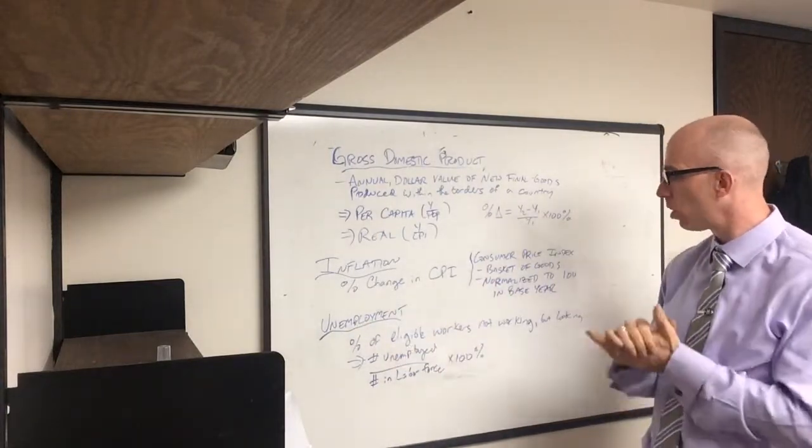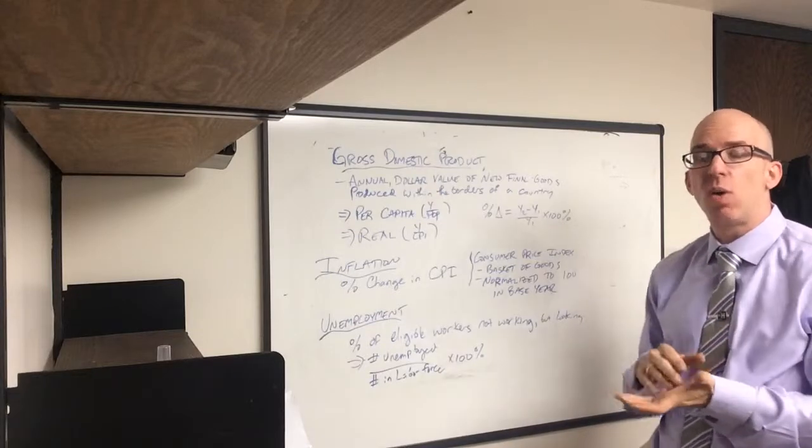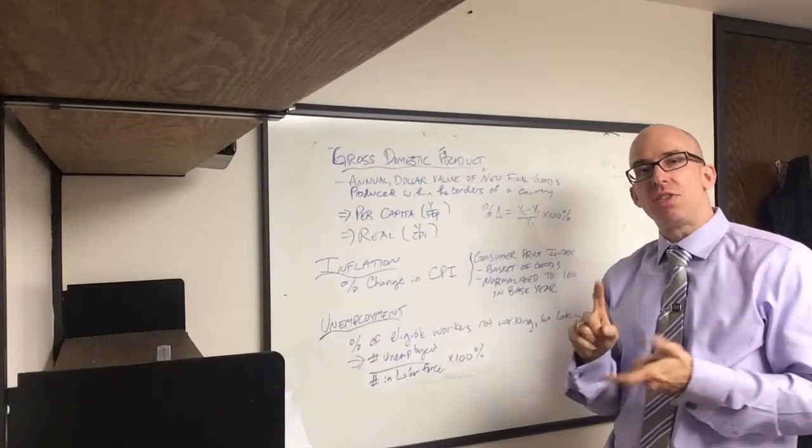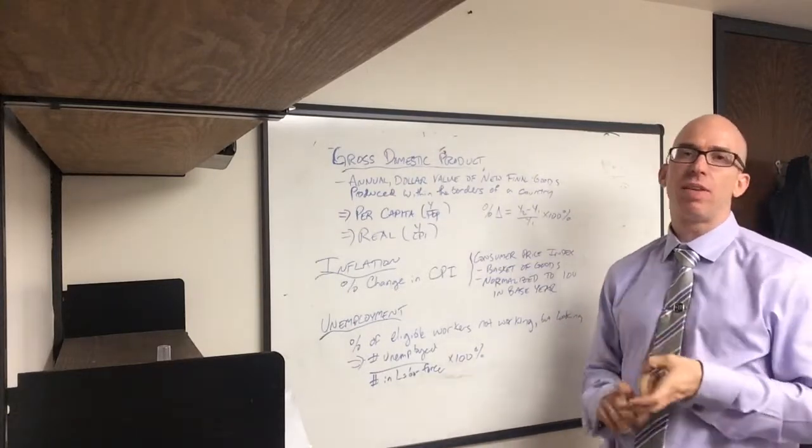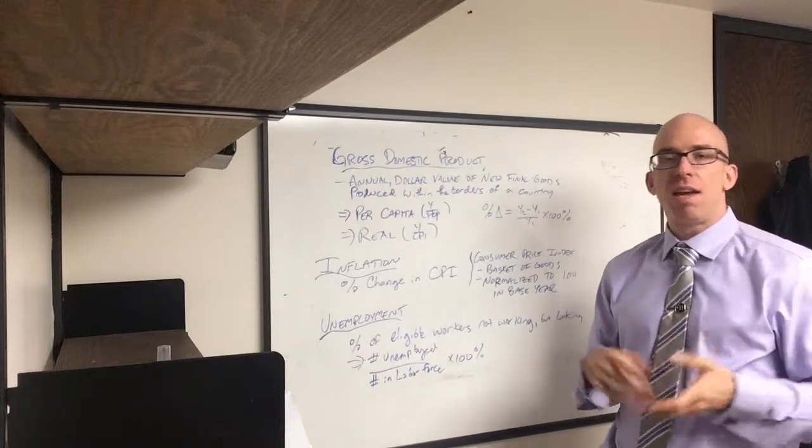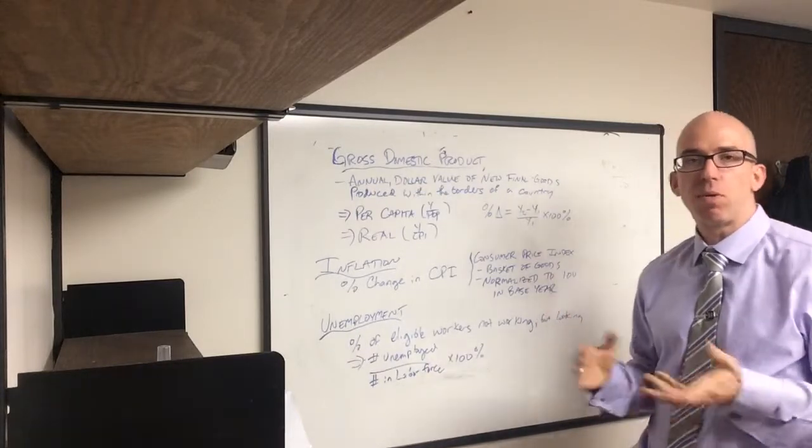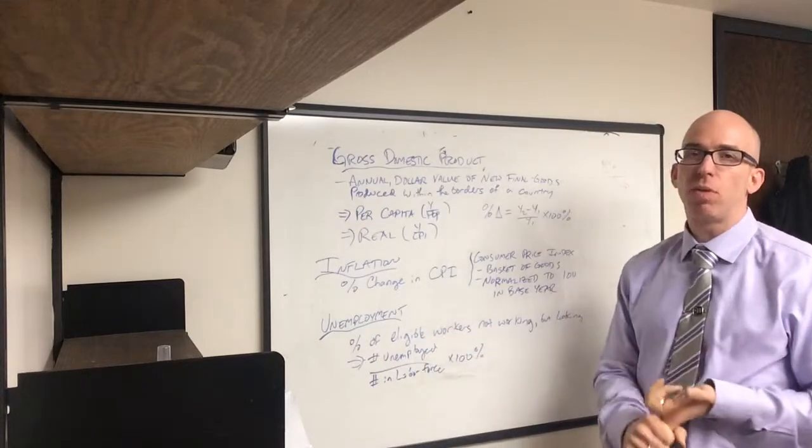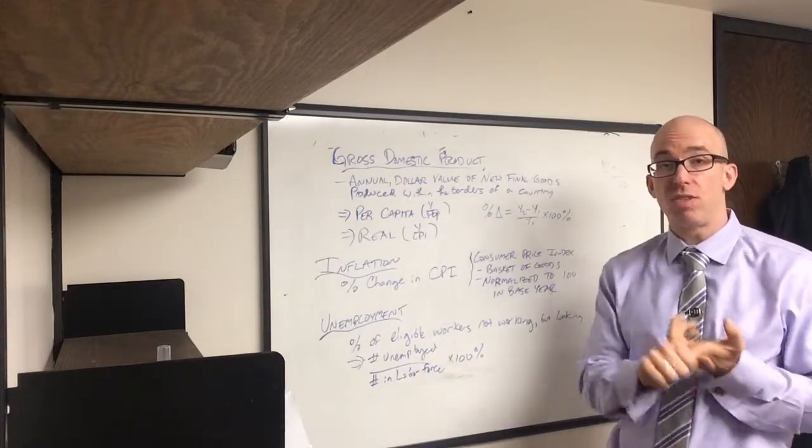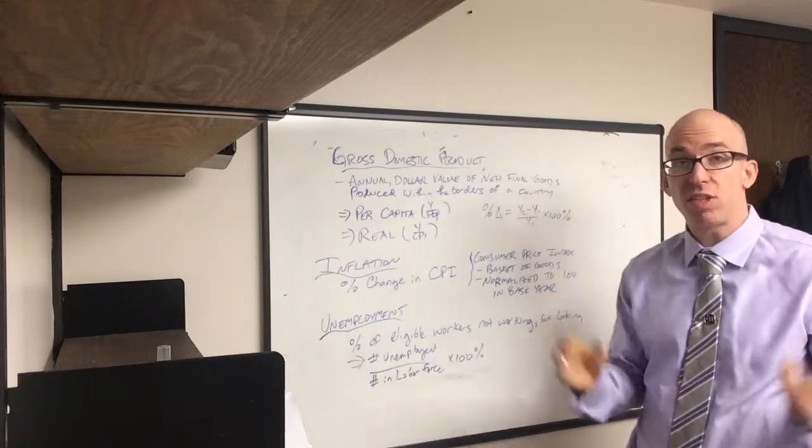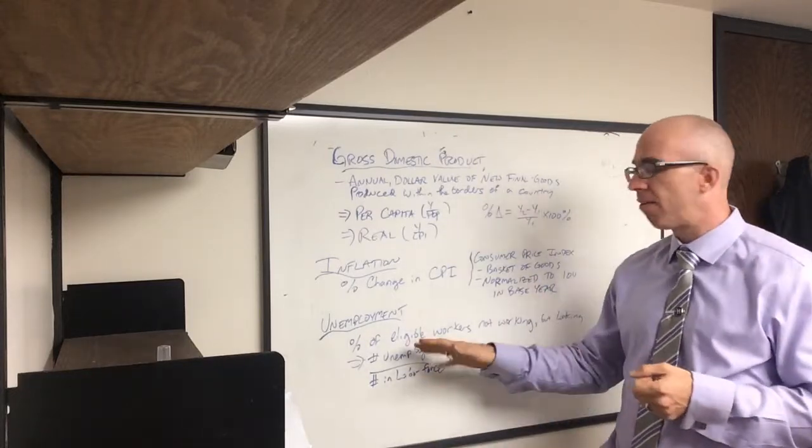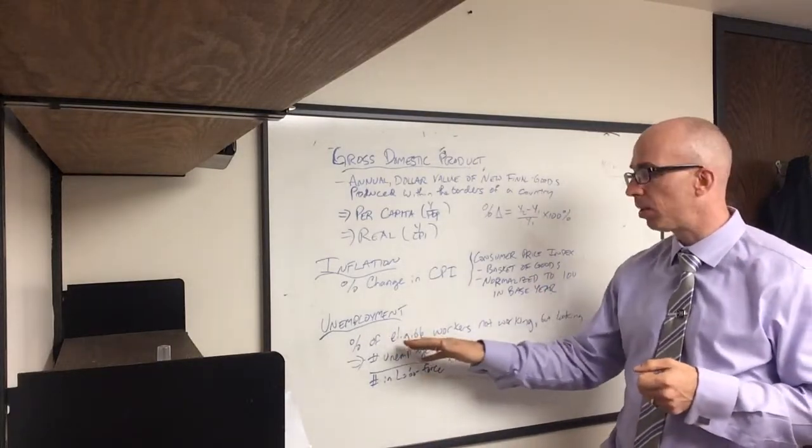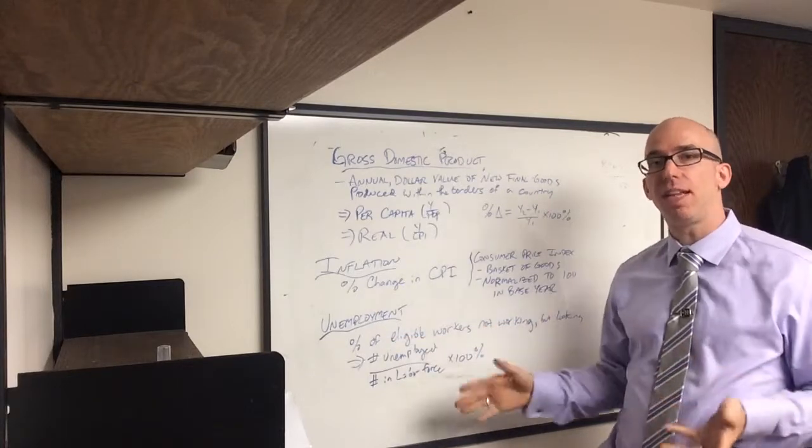Unemployment is the percentage of eligible workers not working but looking for work. We have to decide who is eligible. Generally speaking, young children, retirees, some students, military, active military, people who are in prison and other institutions are not eligible. Also, people who are not working by choice or because they choose not to work because they are discouraged, they can't find a job. About 59-60% of people are usually eligible or part of the labor force.